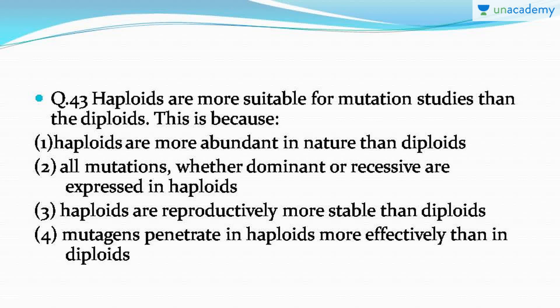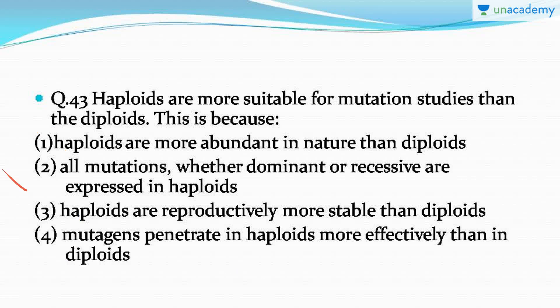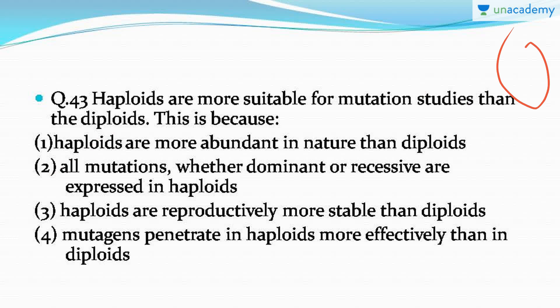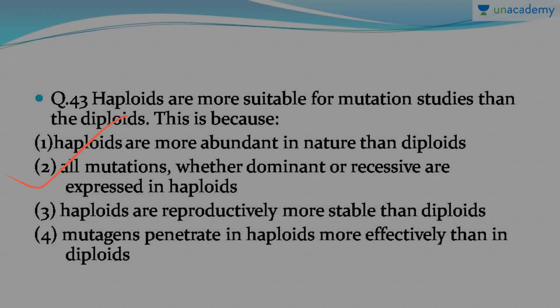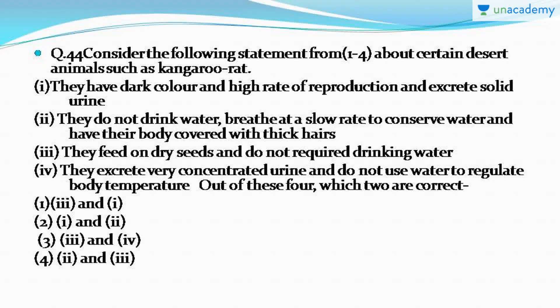The next question: haploids are more suitable for mutation studies than diploids — why? The correct answer is option number two: all mutations, whether dominant or recessive, are expressed in haploids. In diploid organisms, only the dominant allele is expressed and a recessive defective allele remains silent. In haploids, whatever allele is present is expressed as such, making haploid organisms best for studying mutations.